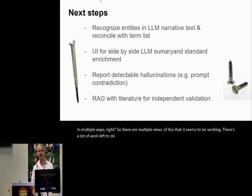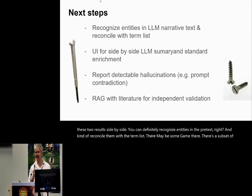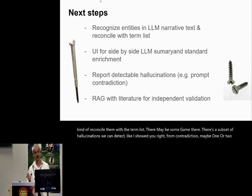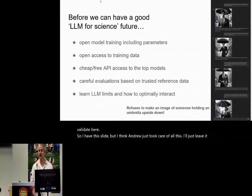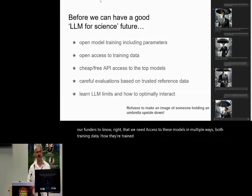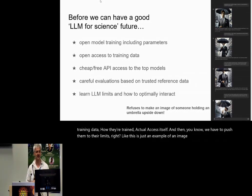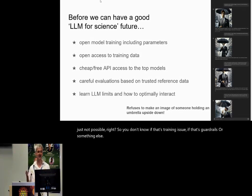There's a lot of work left to do. We were excited about informing and introspecting ontology with this approach. We're trying to build a UI showing these two results side by side. There's a subset of hallucinations we can detect, like prompt contradictions. We need lots of openness and access — that's something important for our funders to know: access to these models in multiple ways, including training data and how they're trained. We also need to push them to their limits — for example, trying to make an image of someone holding an umbrella upside down just wasn't possible, and you don't know if that's a training issue or guardrails.